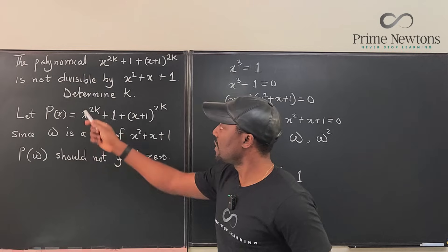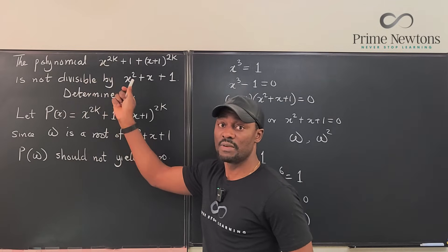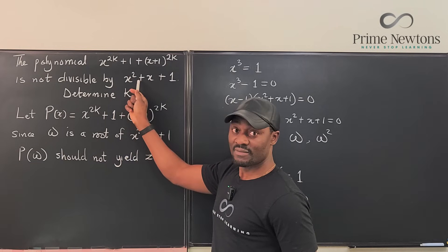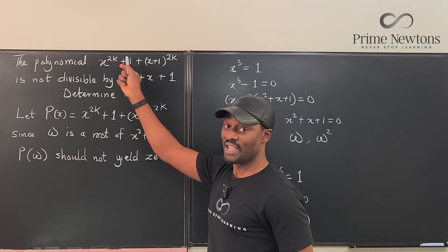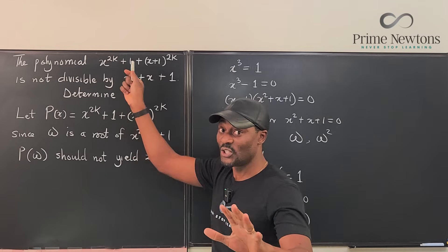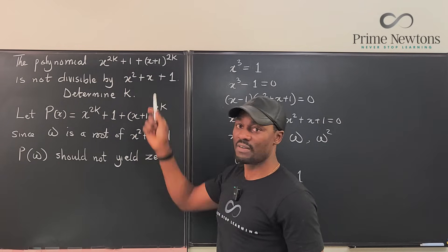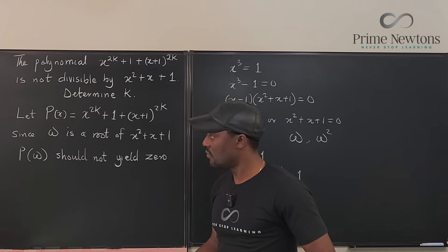Why? Because this polynomial is not divisible by this. Because if anything divides this, it should also divide this, if they divide each other. But if they don't divide each other, the root of this smaller guy should not divide this one. So, what do we do now? Well, let's see what this is gonna give us.